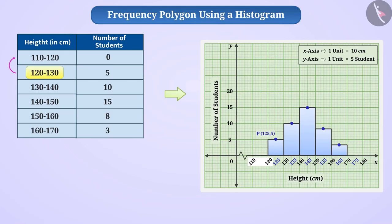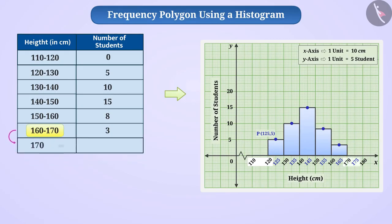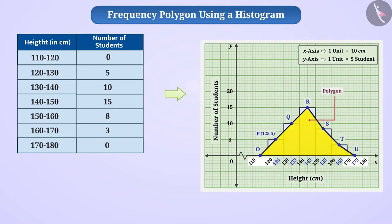Similarly, we also assume that after the class interval 160 to 170, there is an imaginary interval of 170 to 180 with a frequency of 0. We will mark their midpoints. Now, we connect all midpoints with line segments. This gives us figure OPQRSTU made of line segments. On careful observation, you will see that this shape is a polygon whose vertices represent the corresponding frequencies of class intervals. Since the frequencies are represented as vertices of the polygon, we call it a frequency polygon.